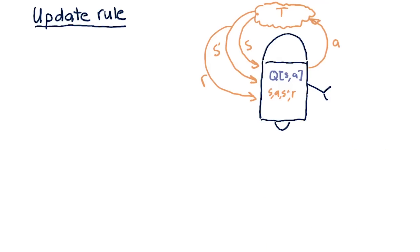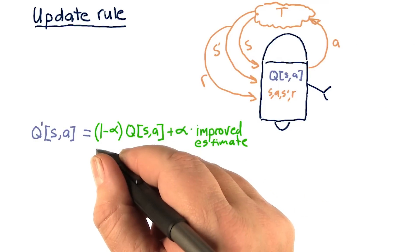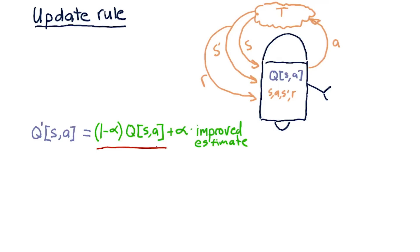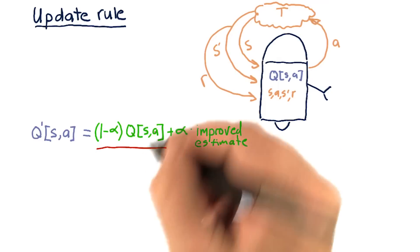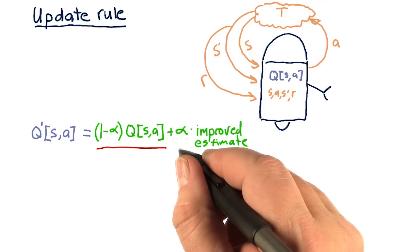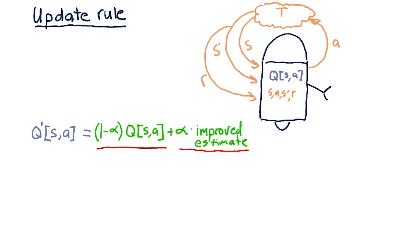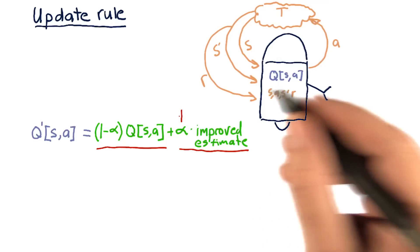How does it take that information to improve this Q table? There are two main parts to the update rule. The first is, what is the old value that we used to have? And that's Q(s,a), and what is our improved estimate? And we want to blend them together.